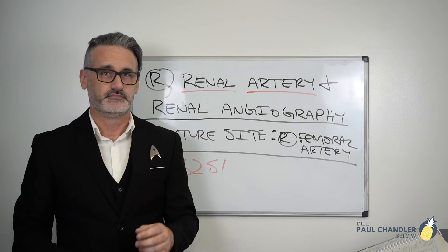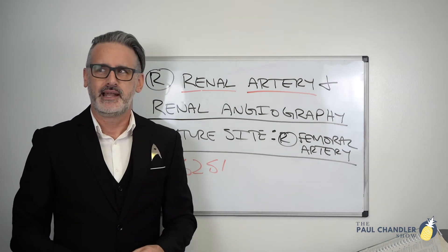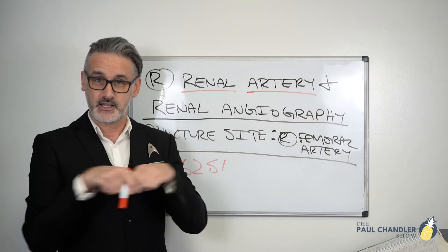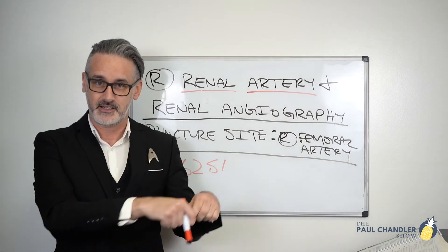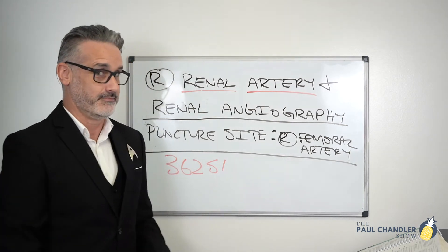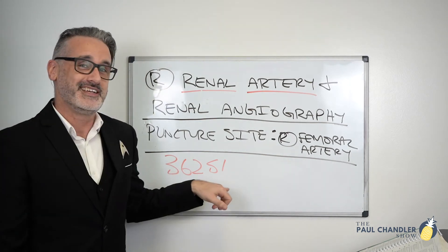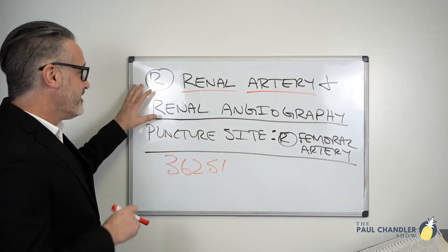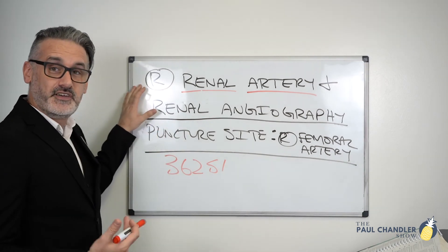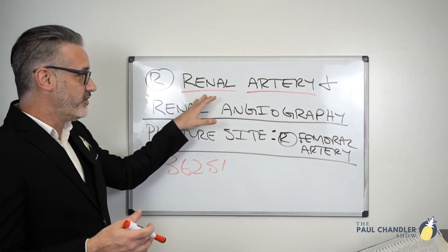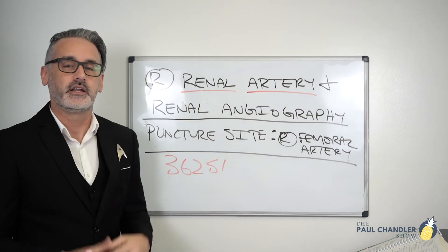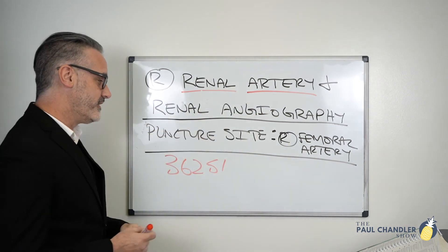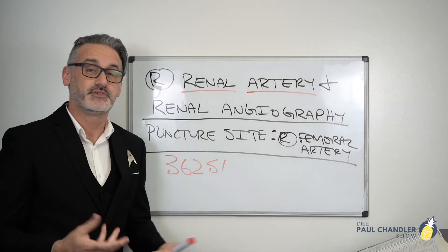Well there it is! Code 36251 includes both parts — it includes the selective catheterization itself, in this case a first order renal artery, and it also includes the second step we're doing, the renal angiography. So 36251 is a combination procedure code covering everything.